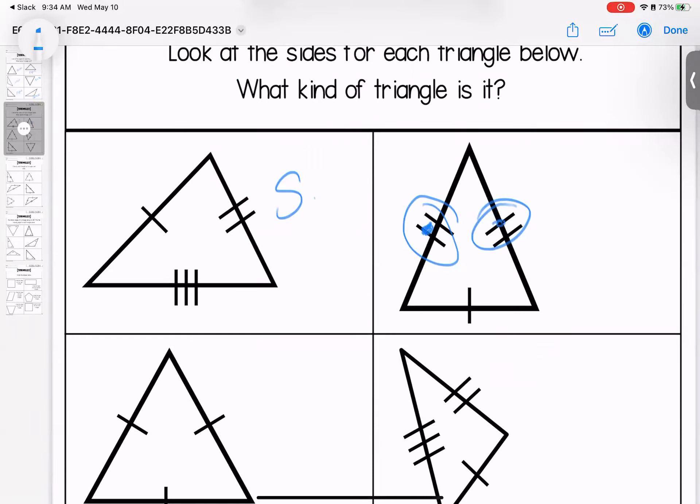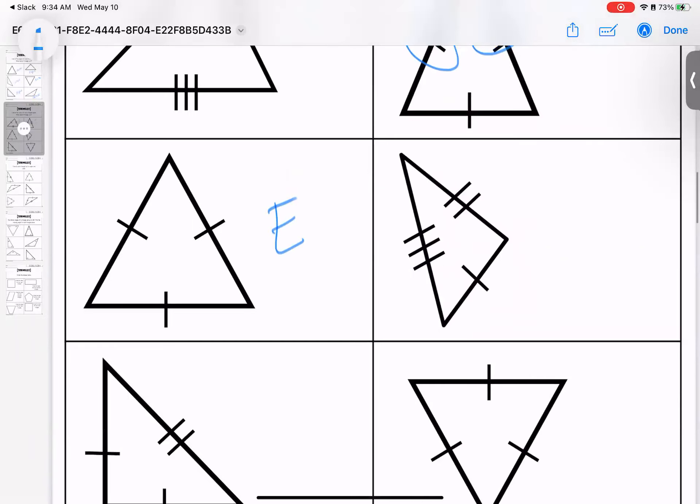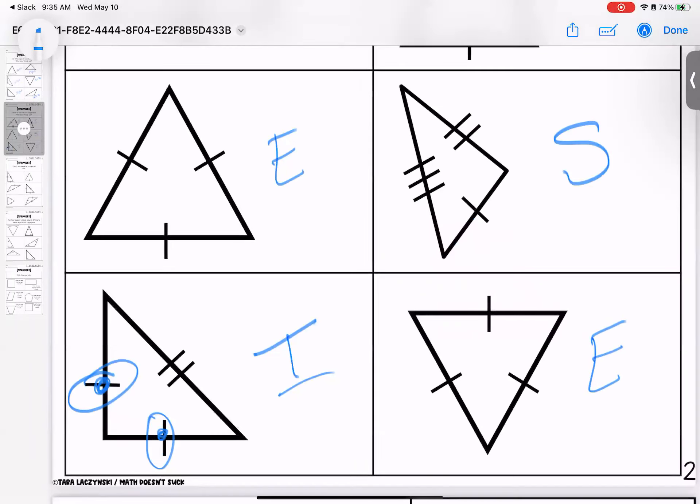Two eyes makes it an isosceles triangle. This is an equilateral. All three sides are equal. This is scalene. All three sides are different. This is another isosceles triangle to match. And this one is equilateral. Questions bring them with you to class.